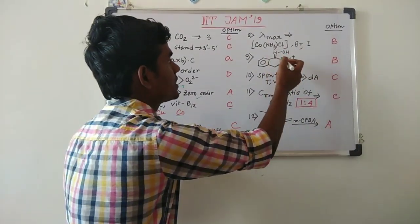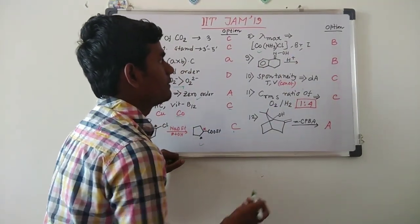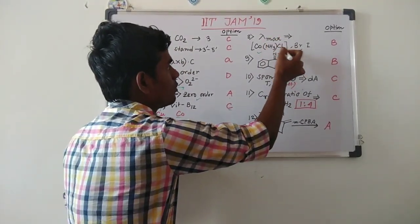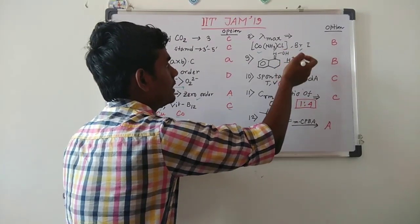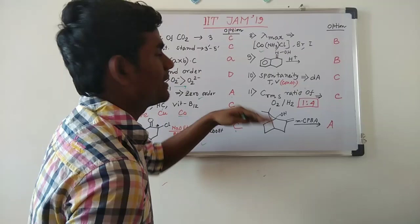Then they have asked one question in which a complex is given with different halogen substituents and they have asked about lambda max - chloro, bromo, iodo. You know that depending upon the ligand field strength the lambda max will change and the answer is B.